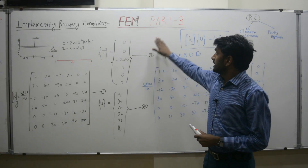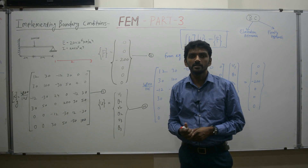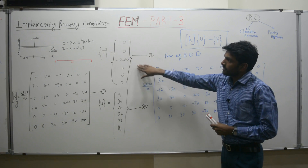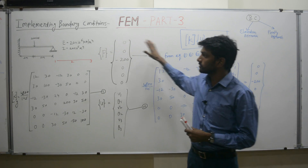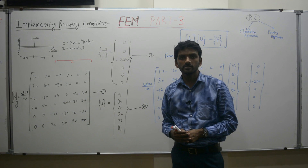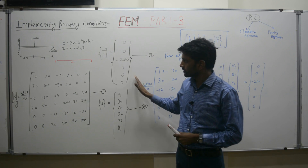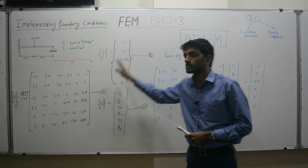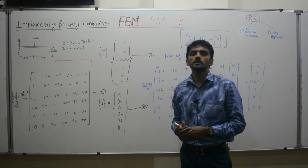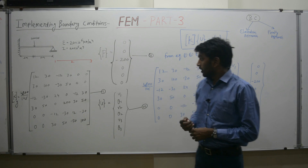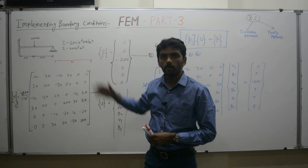Hello everyone. Again, we are here for part 3 in finite element method. In a nutshell, a recapitulation of the last two lectures. In lecture 1, we were discussing the basic steps in finite element analysis — there were basically 9 steps to solve any structural, fluid, or heat transfer problem. In lecture 2, we were discussing the formulation of the global stiffness matrix. Now we are here to discuss the implementation of boundary conditions for various problems.